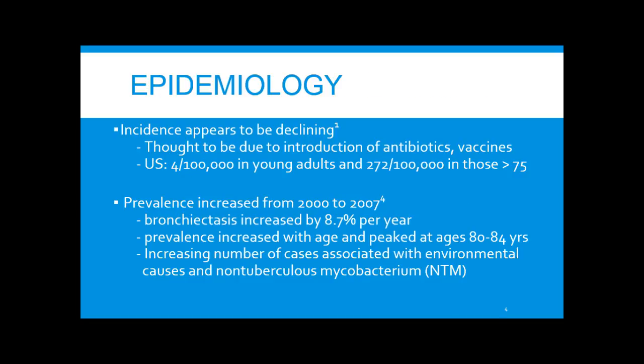Historically, bronchiectasis was thought to be associated with recurrent infections, and the incidence appeared to be declining — thought to be due to the introduction of antibiotics and vaccines. Currently, incidence in the U.S. is 4 in 100,000 young adults, and 272 in 100,000 of those over the age of 75.